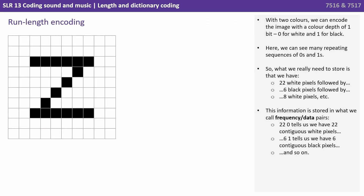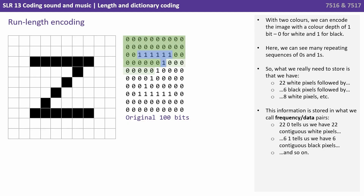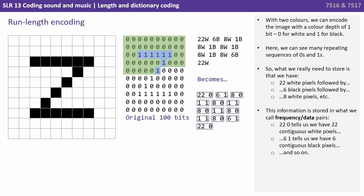With two colours we can encode the image with a colour depth of one bit — 0 for white and 1 for black. Here we can see many repeating sequences of 0s and 1s. So what we really need to store is that we have 22 white pixels, followed by 6 black pixels, followed by 8 white pixels, and so on. This information is stored in what we call frequency data pairs.